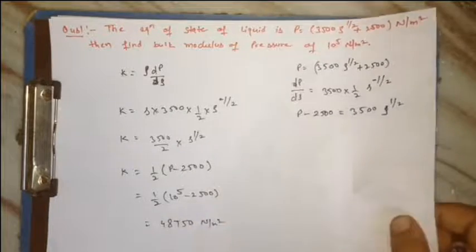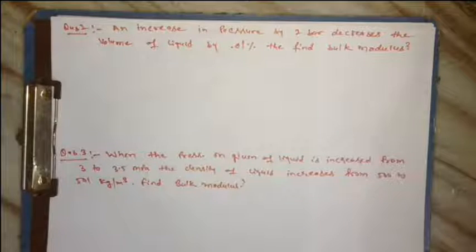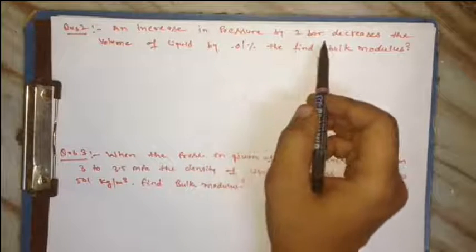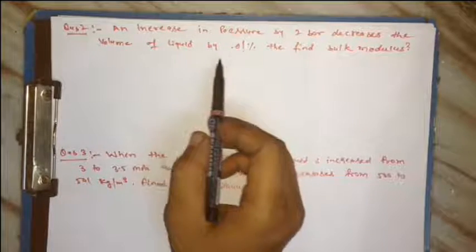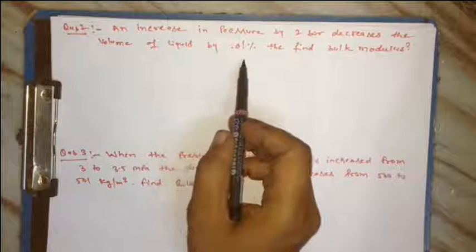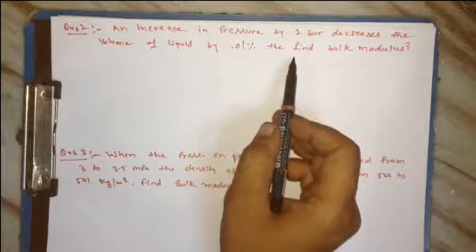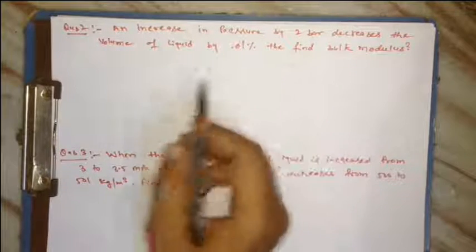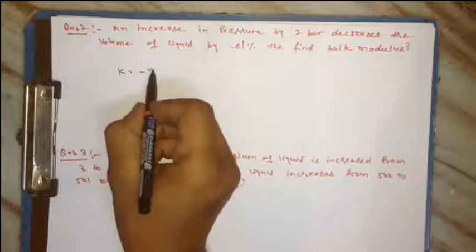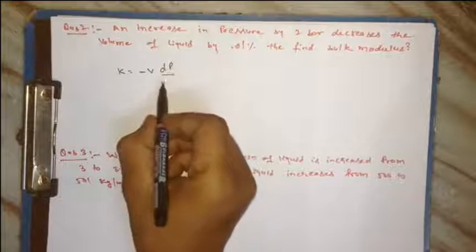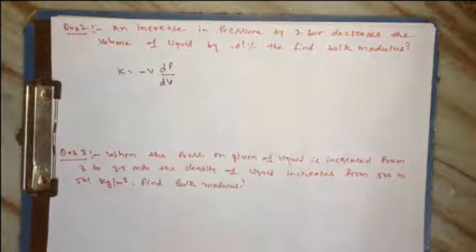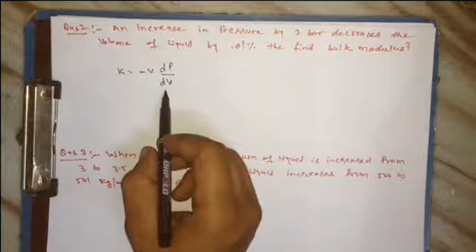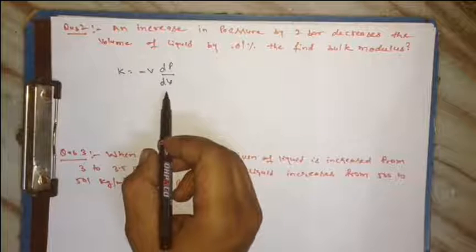Thik hai, next numerical: an increase in pressure by 2 bar decreases the volume of liquid by 0.1 percent. Then find the bulk modulus. Which relation will be used? K is equal to minus V dP/dV.